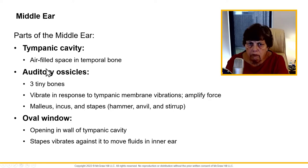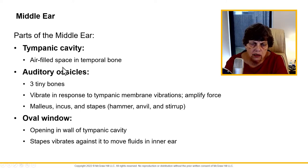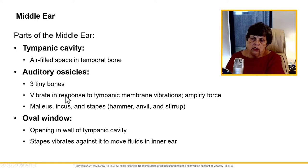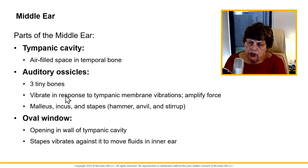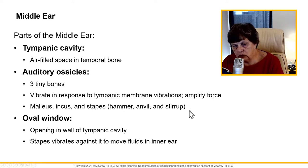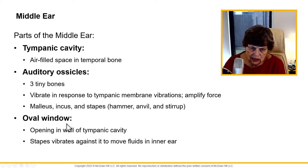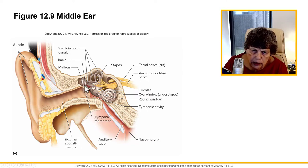Then we go into the middle ear — the tympanic cavity, which is an air-filled space. In there we have the auditory ossicles, or ear bones, and they vibrate as the malleus touches against that tympanic membrane and starts to vibrate, amplifying the sound. We have the malleus, the incus, and the stapes. There is an opening in the wall of that tympanic cavity and the stapes vibrates against what we call the oval window to move the fluids in the inner ear.